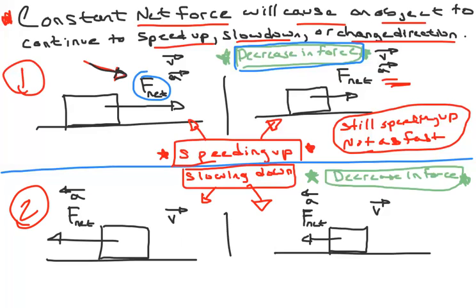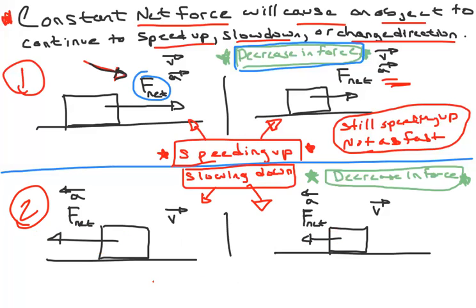The force vector is smaller but still in the same direction, so the object still slows down, just not as fast. Net forces make objects speed up, slow down, and change direction.